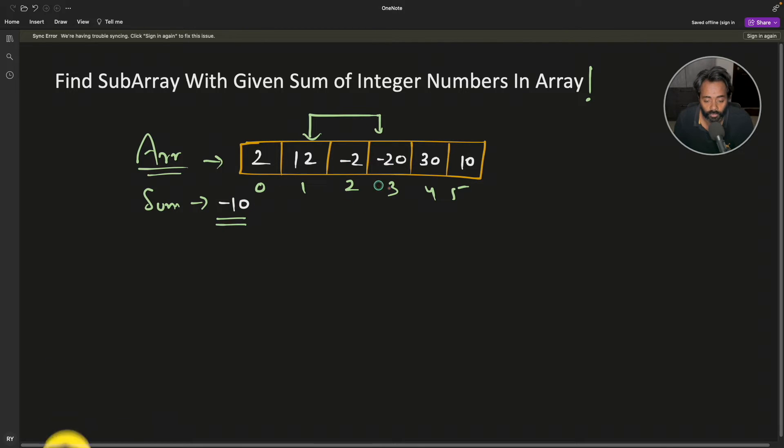There is a brute force approach for this. For that we will have two for loops. We'll start from here in the first for loop and check every other element in the second for loop, keep adding all these numbers and see if that sum is equal to -10.